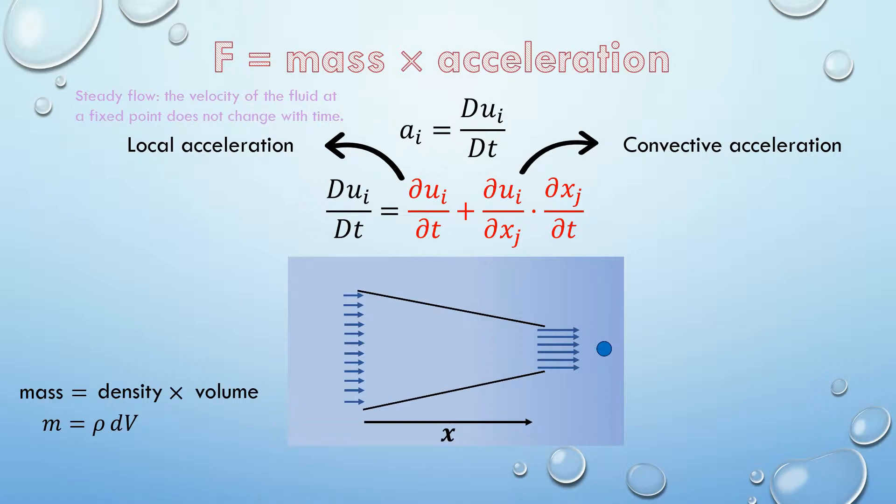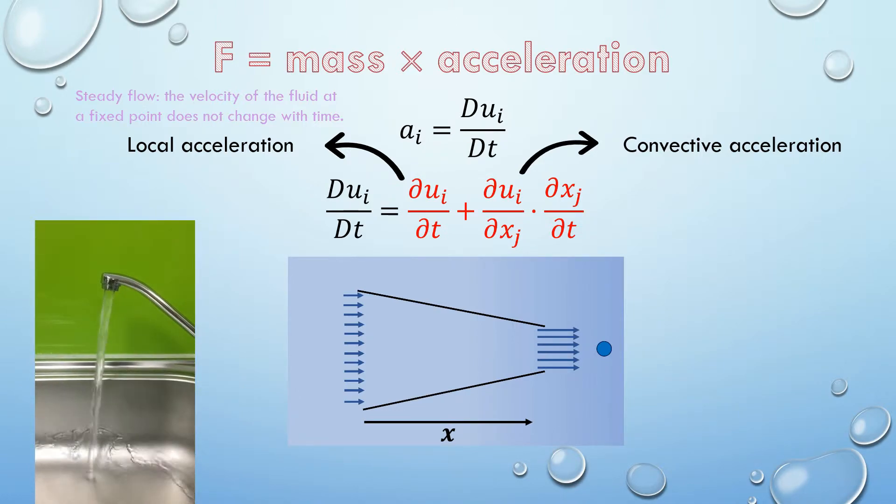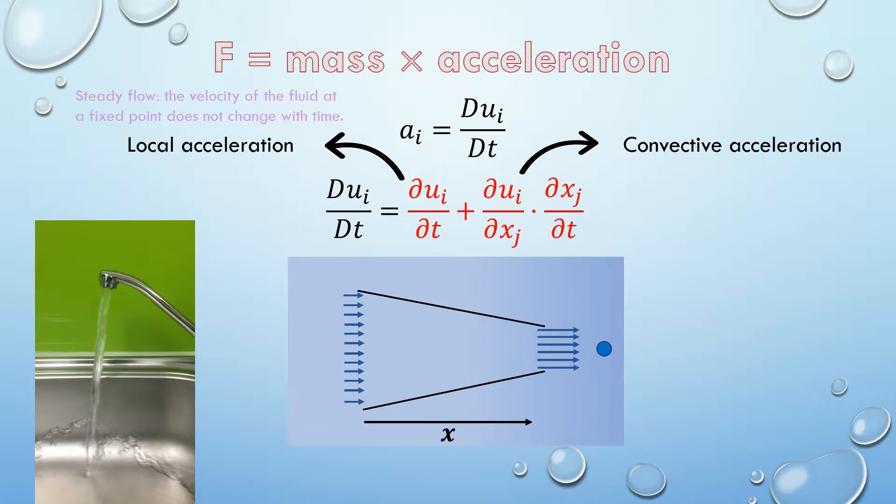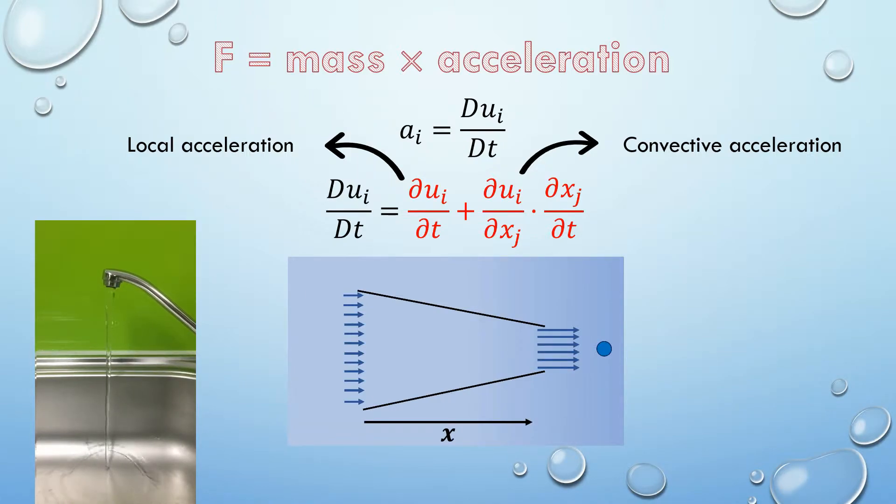For example, if you turn on the tap and leave it running, there is definitely some flow velocity, but in any given point, that flow velocity is always the same in time. We say that this flow is steady, and its local acceleration is zero. But if you now turn off the tap slowly, the flow velocity changes with time. The flow has become unsteady and has a non-zero local acceleration.